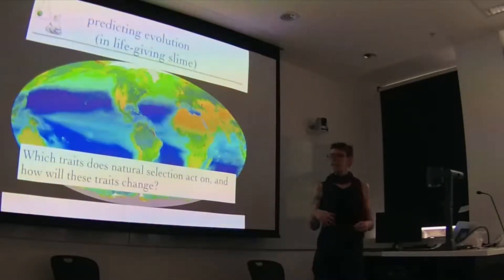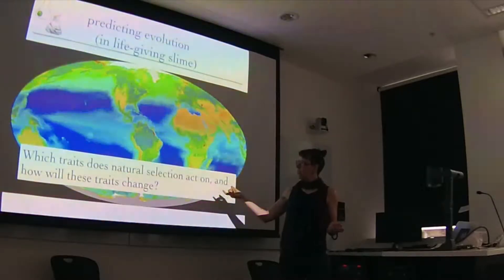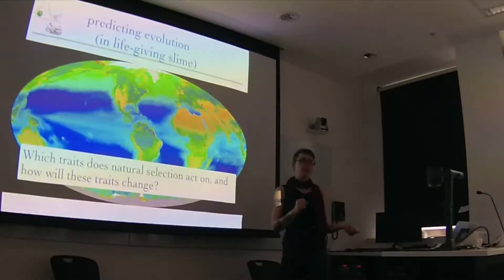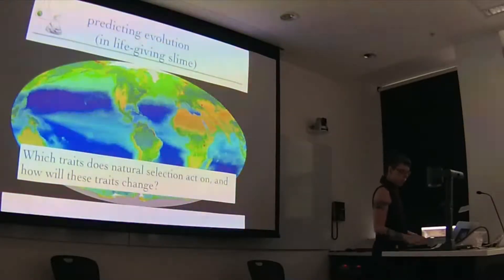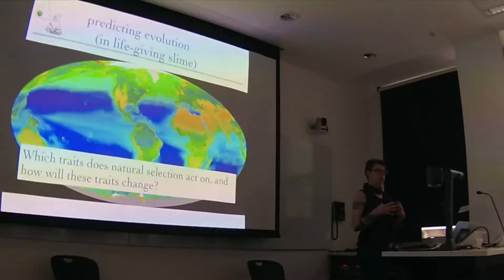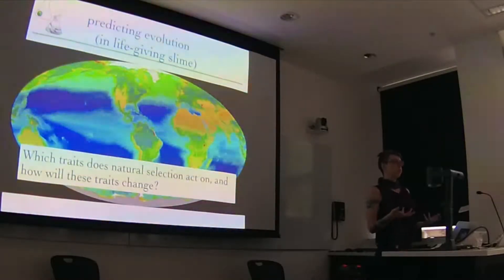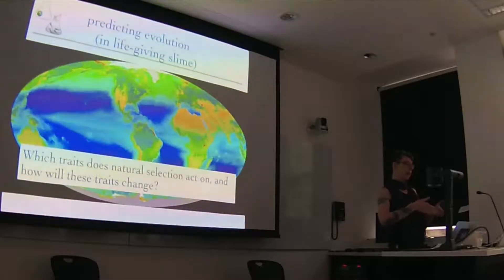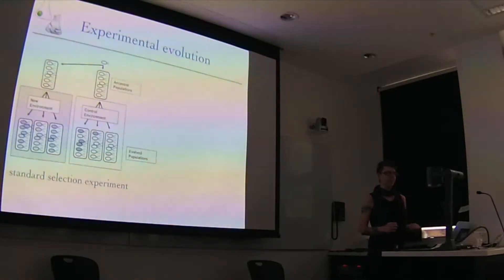That leads towards discrete projects that research councils will fund and department heads will consider a reason to hire someone, which is which traits does natural selection act on and how will these traits change. Basically, that's asking how do things like cell size or primary production or photosynthetic rates or calcification rates change when we predict which of those traits natural selection is going to look at, how long it will look at them, and where it will tell them to go.